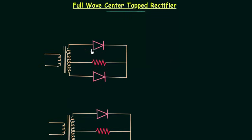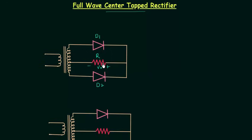There are two diodes and one resistance in this circuit. This diode is D1, this diode is D2, and this resistance is the load resistance. We have to measure the output voltage across this resistance.